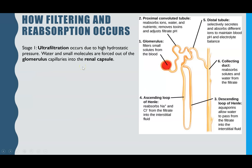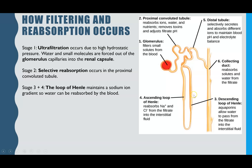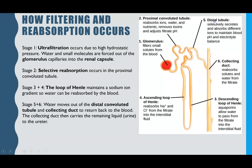Here's an overview of the filtering and reabsorption process. Step one is ultrafiltration in the glomerulus — high pressure forces out water and small molecules into the renal capsule, creating the glomerular filtrate. The filtrate then passes into the proximal convoluted tubule, where 85% of it gets reabsorbed back into the blood. Next, the loop of Henle maintains the sodium ion gradient, enabling water to be reabsorbed by osmosis. Finally, in the distal convoluted tubule and collecting duct, further water is removed by osmosis and reabsorbed into the blood, and the remaining liquid forms urine.